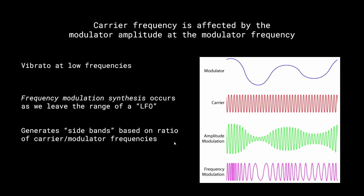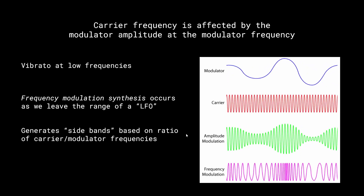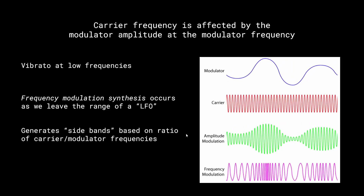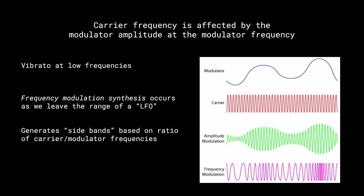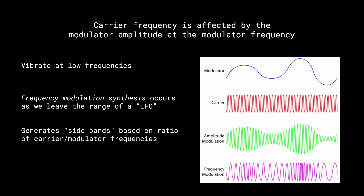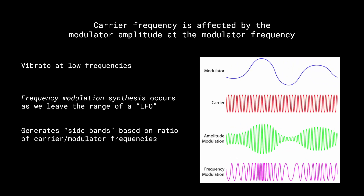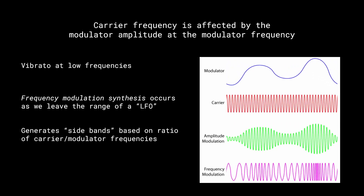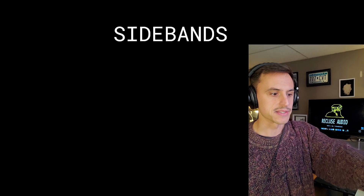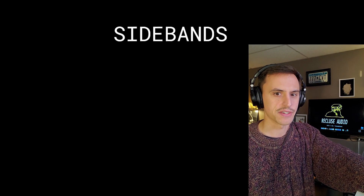If we were in SuperCollider, we'd call it that. FM synthesis generates sidebands based on the ratio of the carrier to the modulator, so that ratio becomes very important. For today we're going to deal with very nice integer ratios. Let's talk about what sidebands are and how we can calculate them — it's very easy.